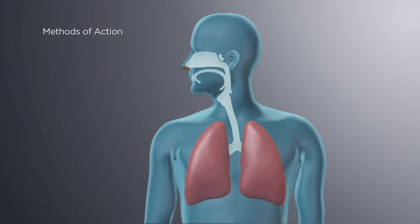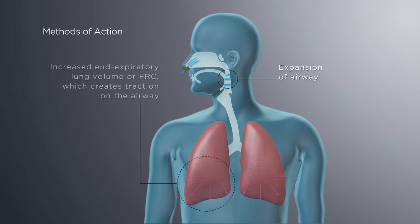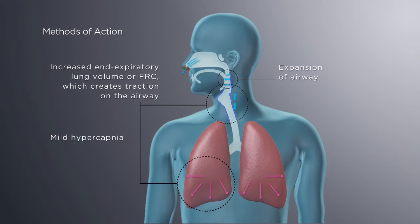There are three possible mechanisms through which ProVent therapy works: expansion of the airway until the start of the next inspiration; increased end-expiratory lung volume or FRC, which creates traction on the airway making it less collapsible; and mild hypercapnia leading to increased respiratory drive to the upper airway.